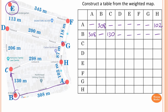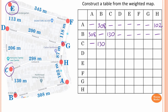On vertex C: C to A, there is no direct connection. C to B is 130. From C to C is zero weighting — leave it blank. From C to D is 206. From C to E, no direct connection — leave it blank. Similarly with F. C to G, no direct connection. And C to H is 298.